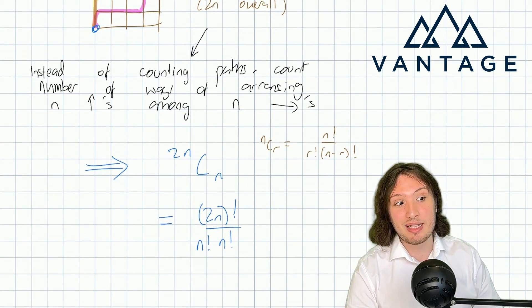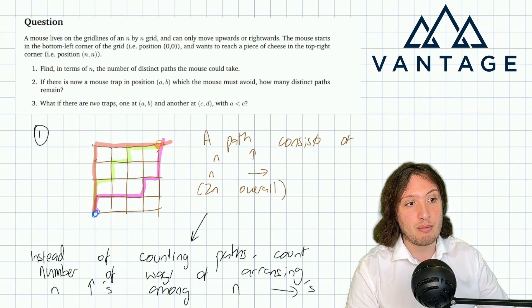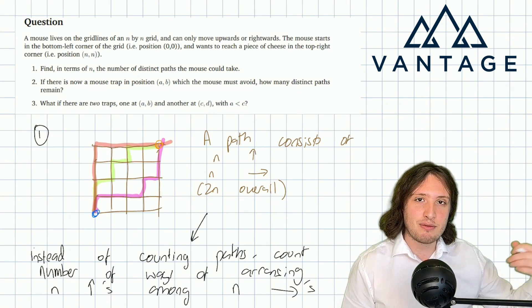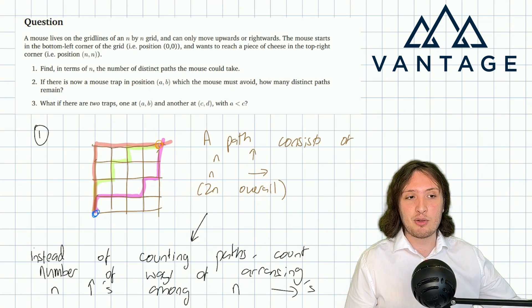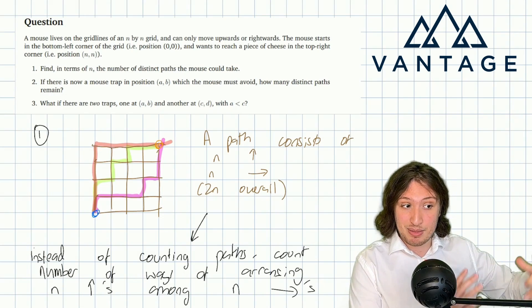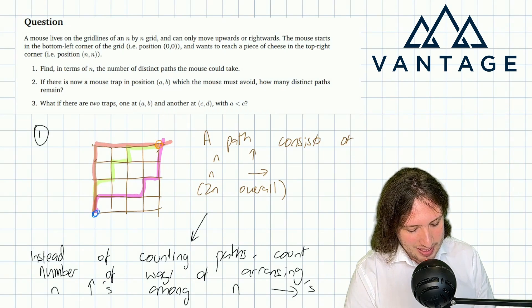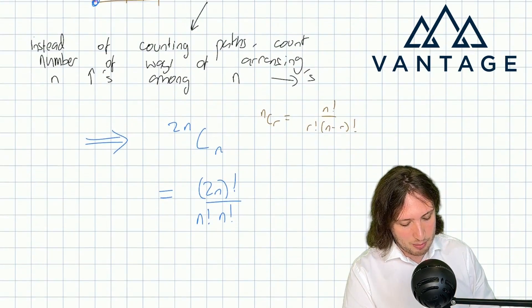We've got our answer: 2n choose n. But as is often the case with interview questions, we now think about follow-up problems. In part two, suppose there is a mousetrap at position (a,b) which the mouse must avoid — how many distinct paths remain? We could try to count paths that don't go through the trap directly, but that undermines our arrangements logic. Instead, consider the opposite: count the illegal paths that go through (a,b), and subtract that number from 2n choose n.